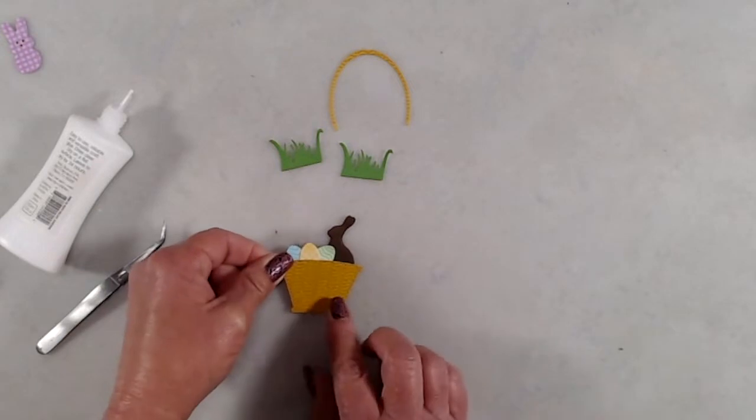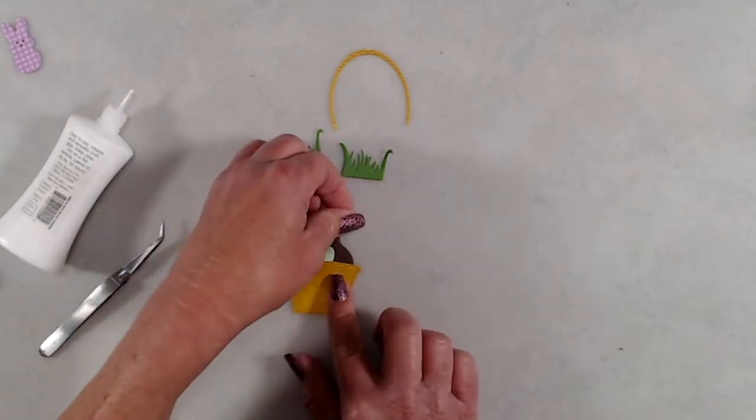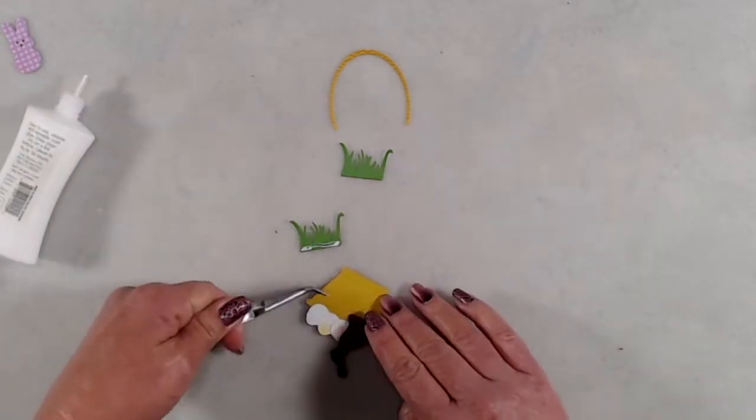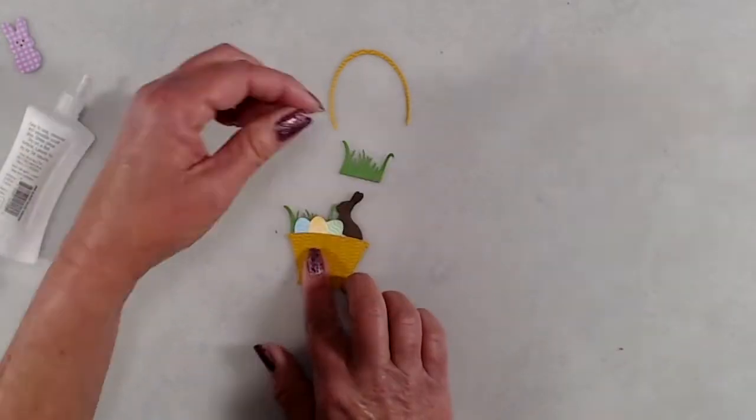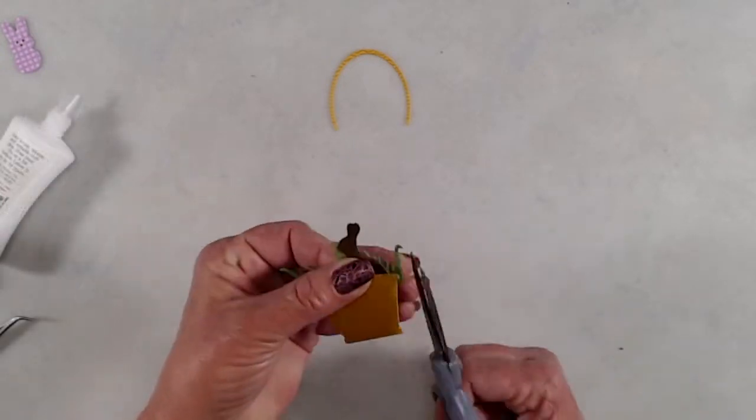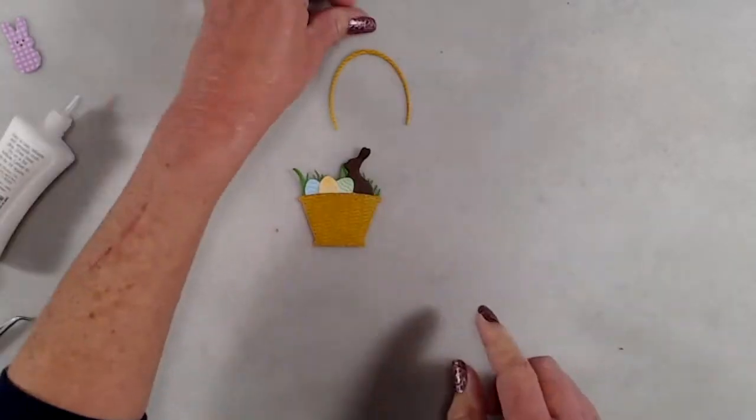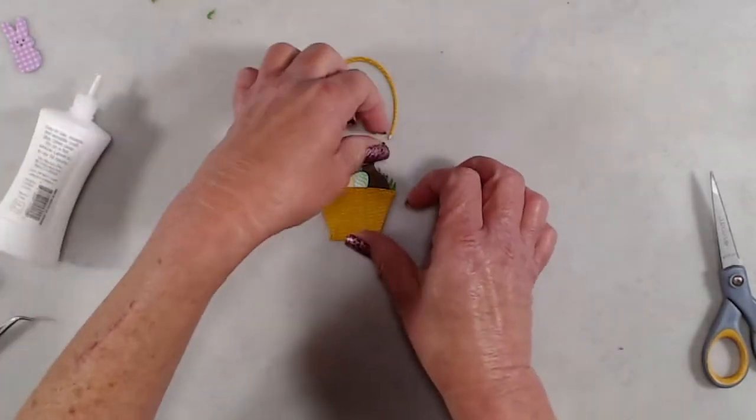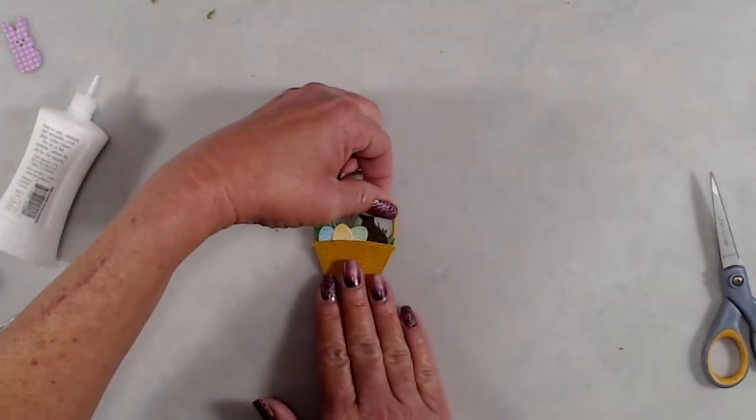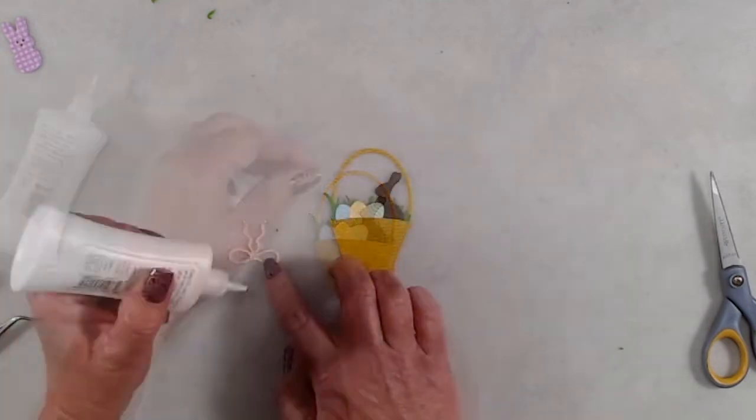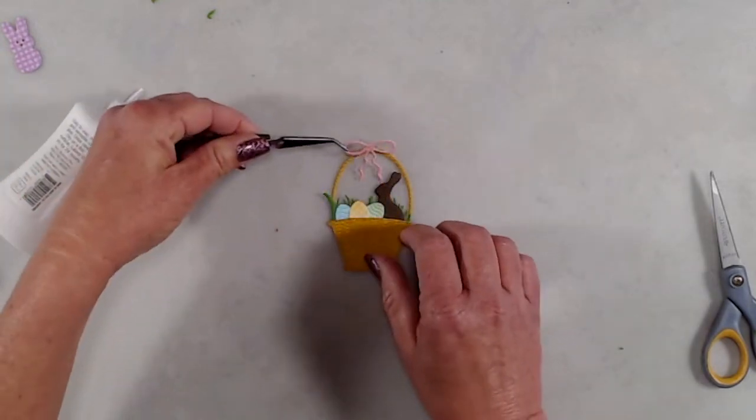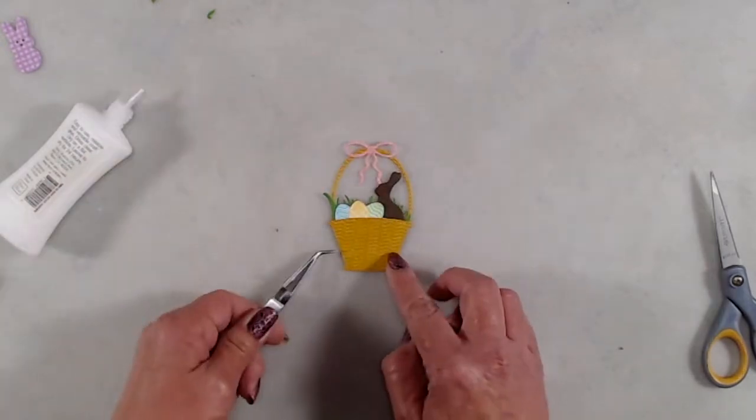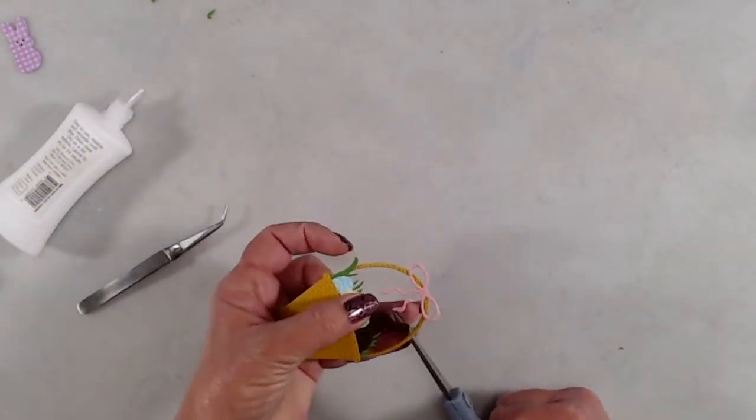Some of the grass pieces were a little bit long, so I used my scissors just to trim those excess pieces off. Then I added tiny dots of glue on the bottom of the handle and adhered that to the basket. I die cut the bow from a piece of pink cardstock and added that to the top of the handle on the basket. Then I used my scissors to trim just a tiny little bit off the tails of that bow.